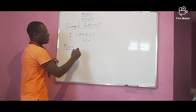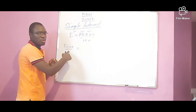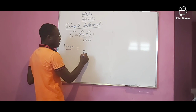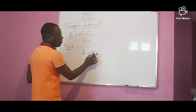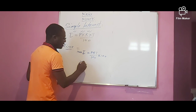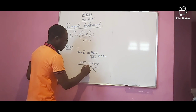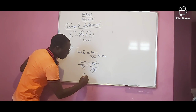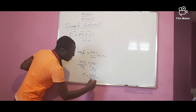When you are asked about time, it means they have given you rate, principal, and interest — so you are missing time. You must derive a formula from the original formula. Starting from I = PRT/100, multiply both sides by 100 to get 100I = PRT, then divide both sides by PR. So: Time equals 100 times interest over principal times rate.